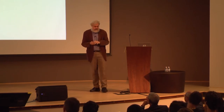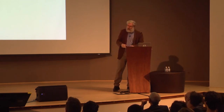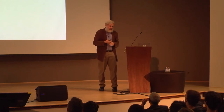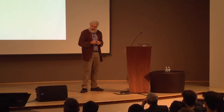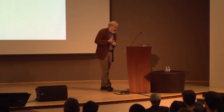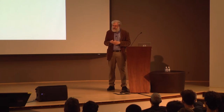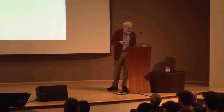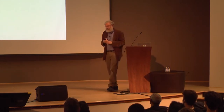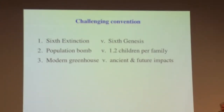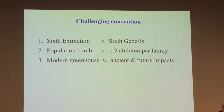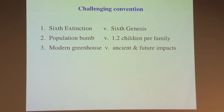To be somewhat provocative, I want to challenge three conventions. One is that we're in the middle of a sixth extinction and it's all our fault. But whenever you say that many species are dying off, that's missing part of the equation — how many species are being created. That's rarely mentioned. It would be like saying humans are dying off at 50 million a year without talking about birth rate.